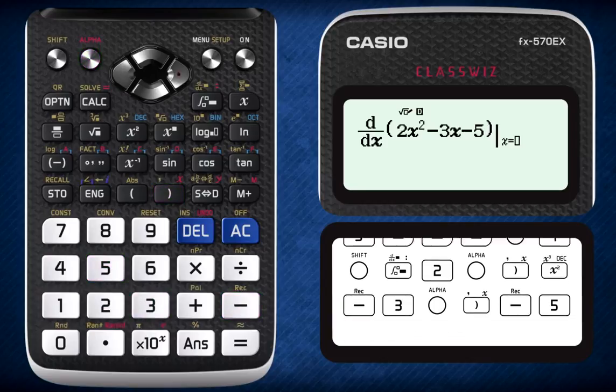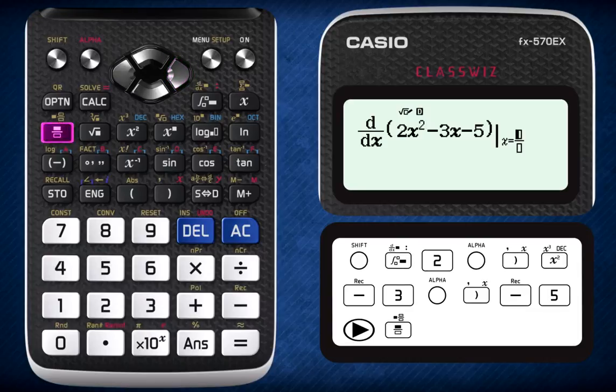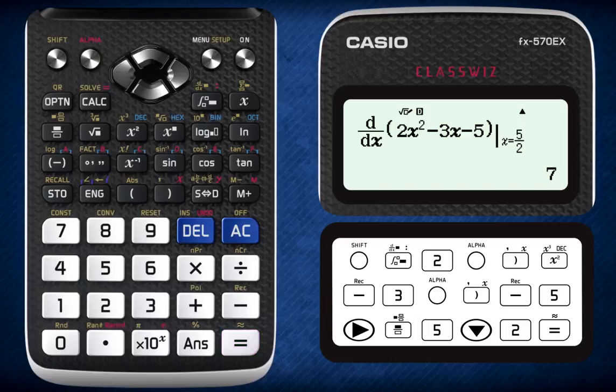Lastly, shift cursor to the right to enter the value of t which is 5 over 2 and pressing equal tells you that the answer is 7. Now this answer corresponds to our earlier calculations.